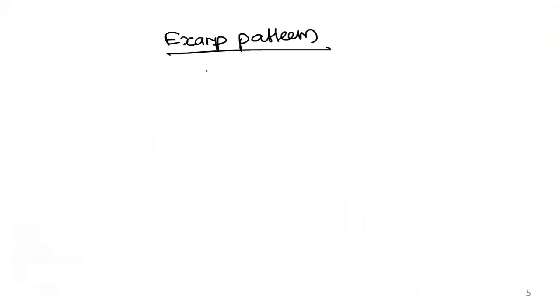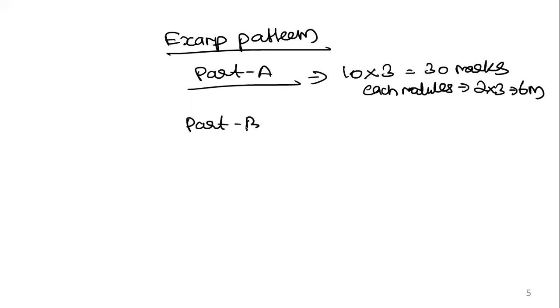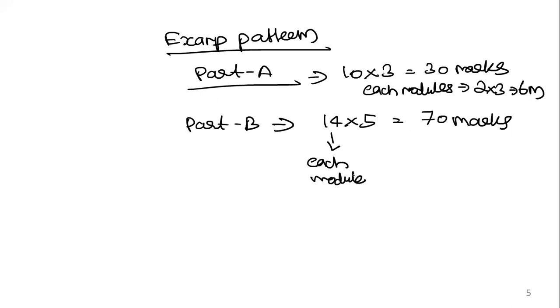Coming to the exam pattern: Part A is 10 questions of 3 marks each, totalling 30 marks, with each module contributing 2 questions worth 6 marks. Part B is 5 questions of 14 marks each, totalling 70 marks, with 14 marks per module.